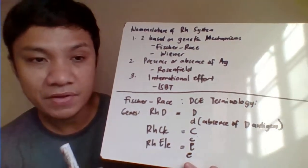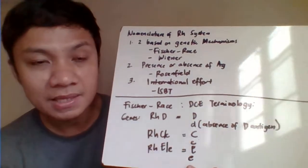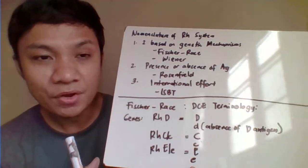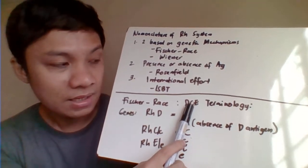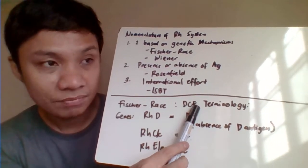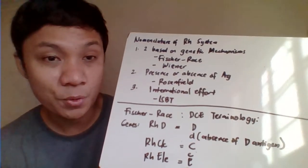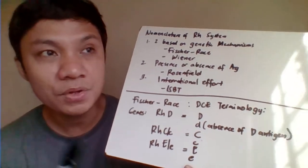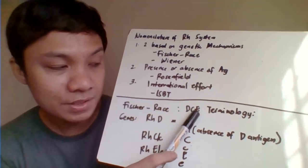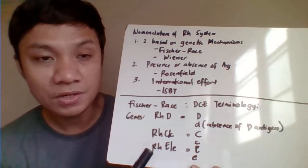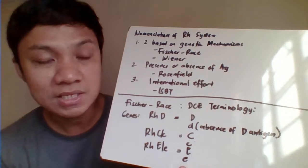For Fisher & Race, the terminology is DCE — not CDE. According to Fisher & Race, the location of the C gene is primarily located between D and E, so the arrangement is DCE based on chromosome location. Fisher & Race believe that two genes control the production of RH antigens: the RHD gene codes for the production of the D antigen, and the RHCE gene codes for C and E antigens.